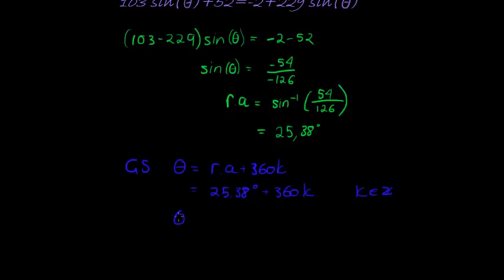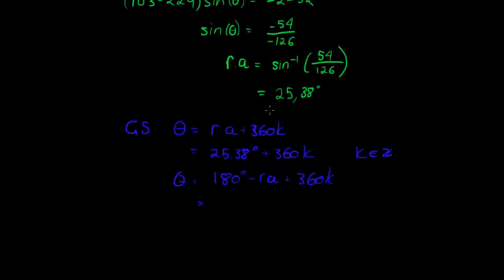Or theta is equal to 180 degrees minus the reference angle plus 360 times K. This 180 is the other quadrant where sine is positive. So 180 minus 25.38 gives me 154.62 plus 360 times K, where K is an integer.